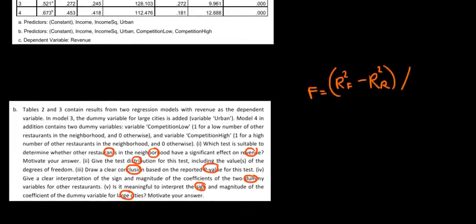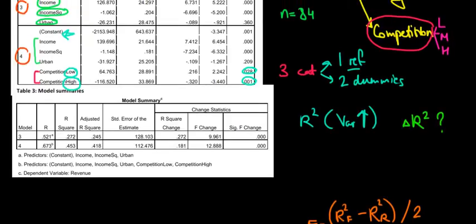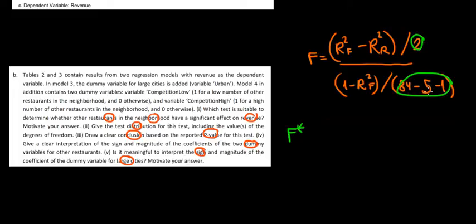The denominator is one minus the R-squared of the full model, divided by the number of observations minus the number of parameters in the full model. We have 84 observations and 5 parameters — so 84 minus 5 minus 1 equals 78. We would compare this with the F critical value, which has degrees of freedom 2 and 78. So the critical value is F(2, 78).